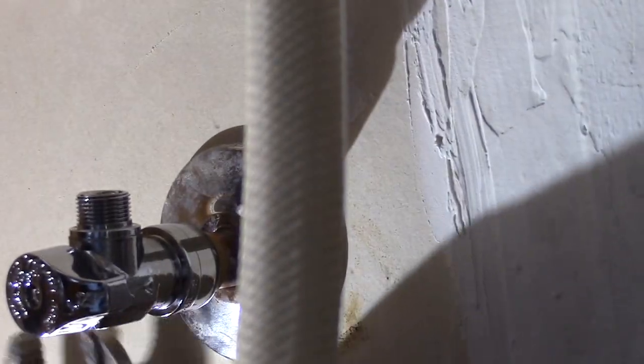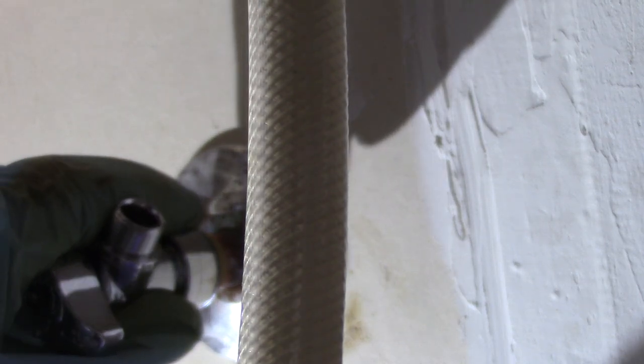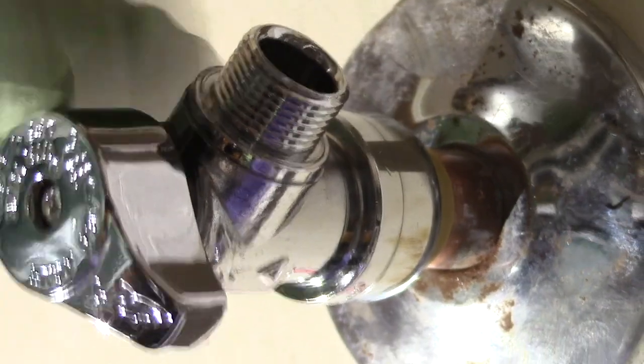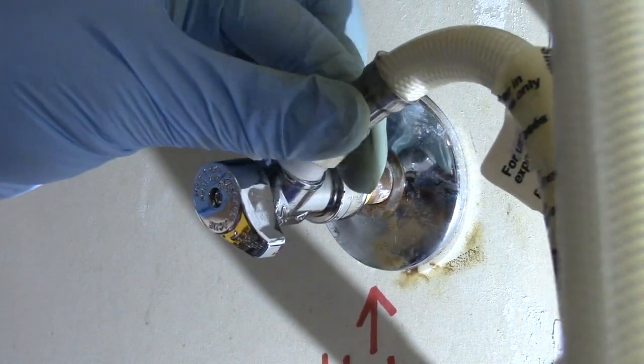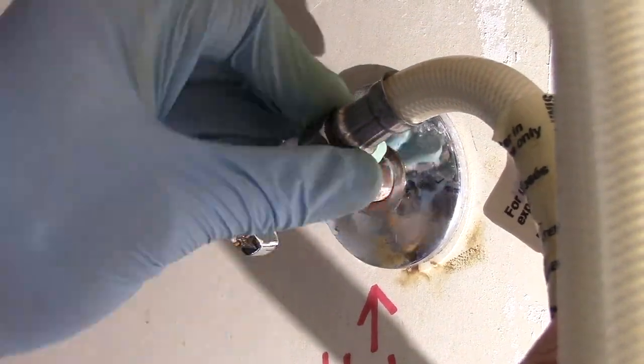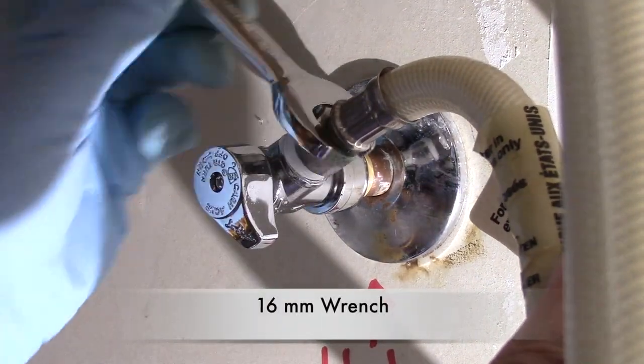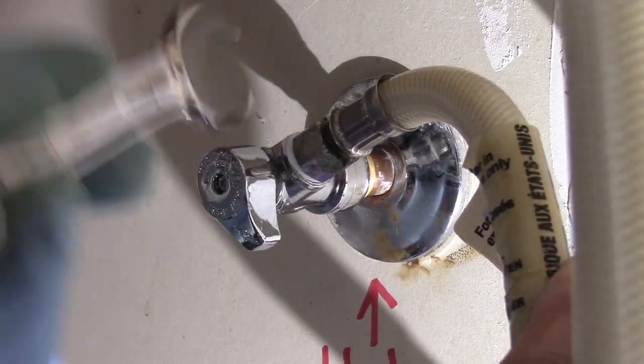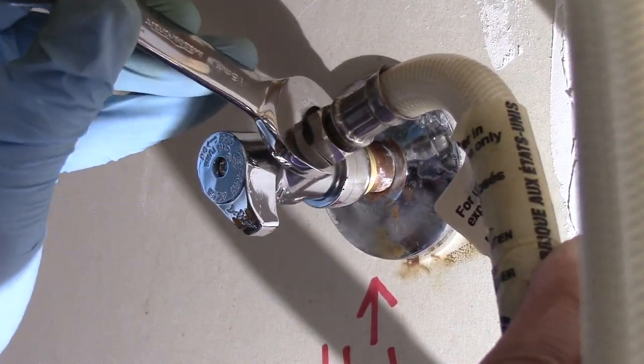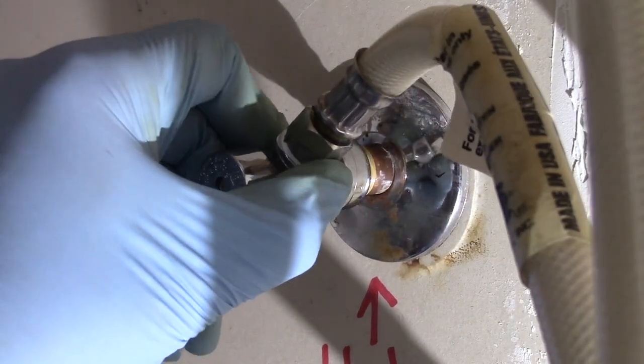Now we can push the SharkBite into the pipe until it bottoms out. The great thing about a SharkBite is you can twist it around to get the best angle. Looking good. Then we install our Teflon tape in clockwise position and hand start it before tightening it up with a wrench, righty tighty.